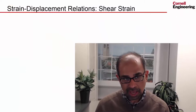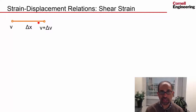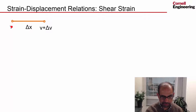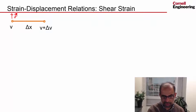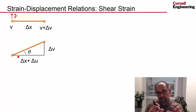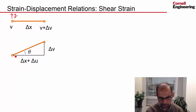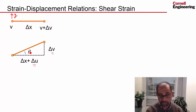Let's consider the strain-displacement relations for shear strains. I'll go back to my edge aligned along the x-direction, but now I'm looking at displacements in the y-direction also. This point will displace by an amount V in the y-direction, and this will displace by an amount V plus ΔV in the y-direction. After I apply my loads, it will have elongated by ΔU in the x-direction and moved up by ΔV in the y-direction, producing a skewing.